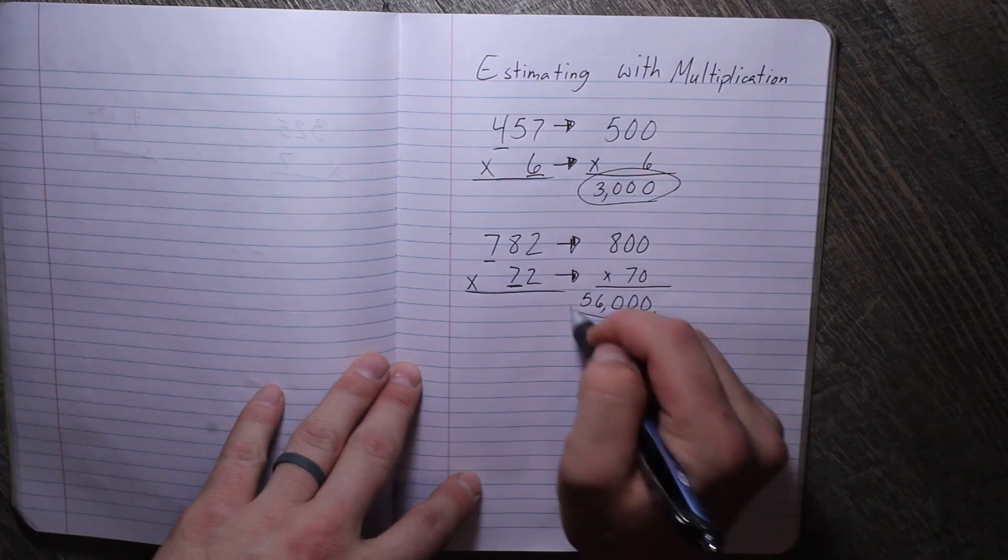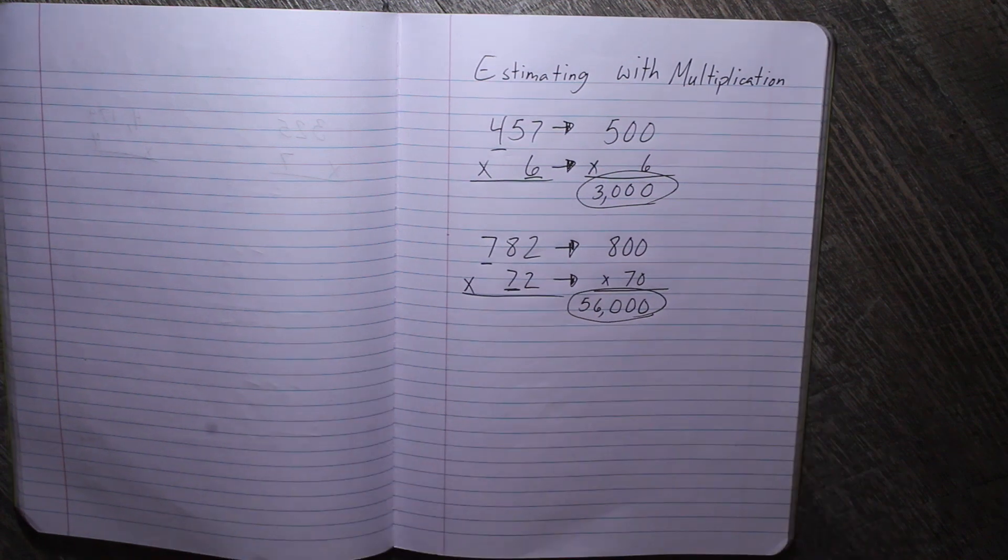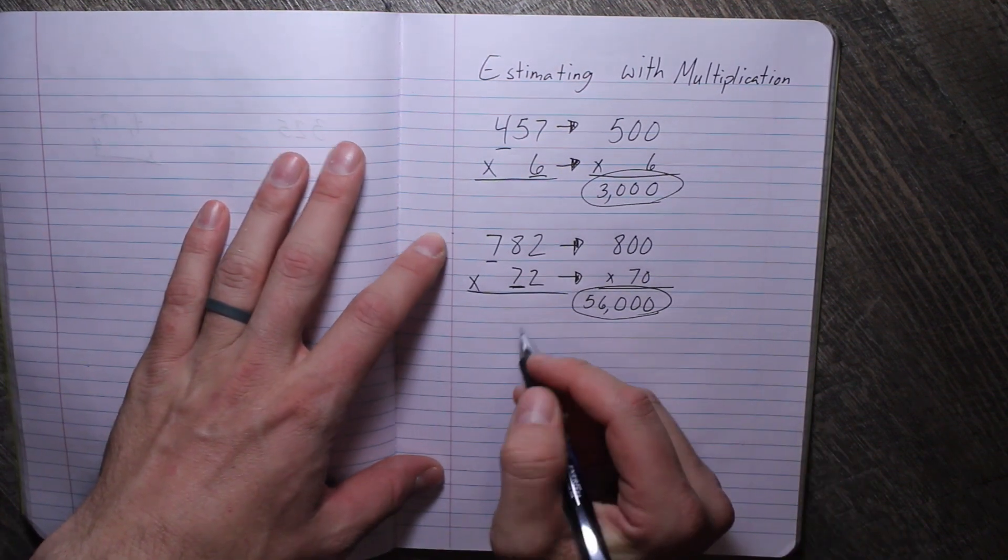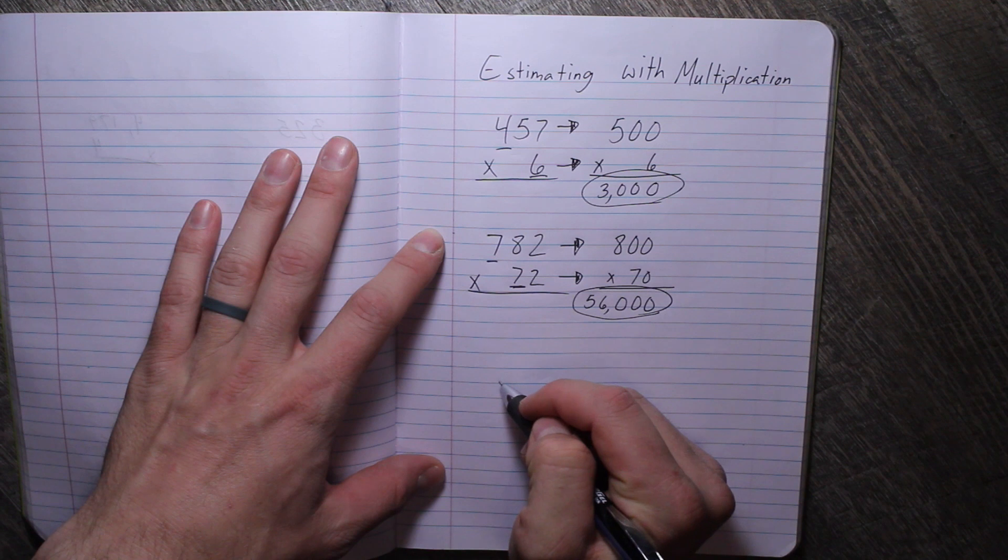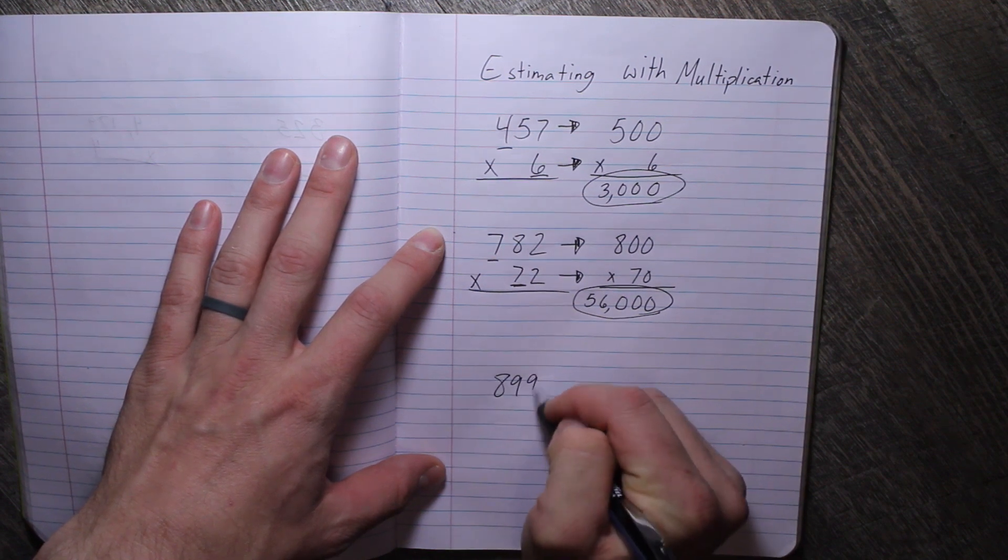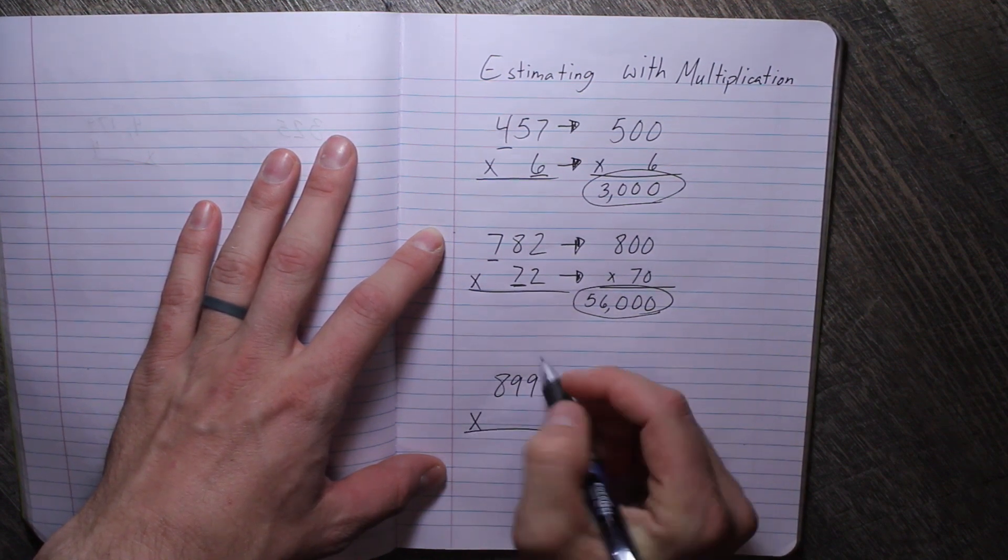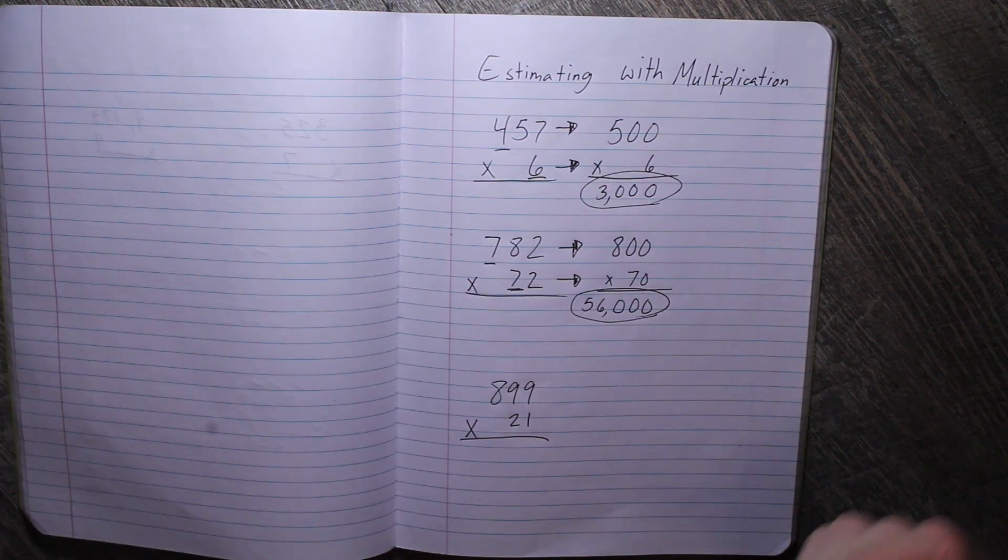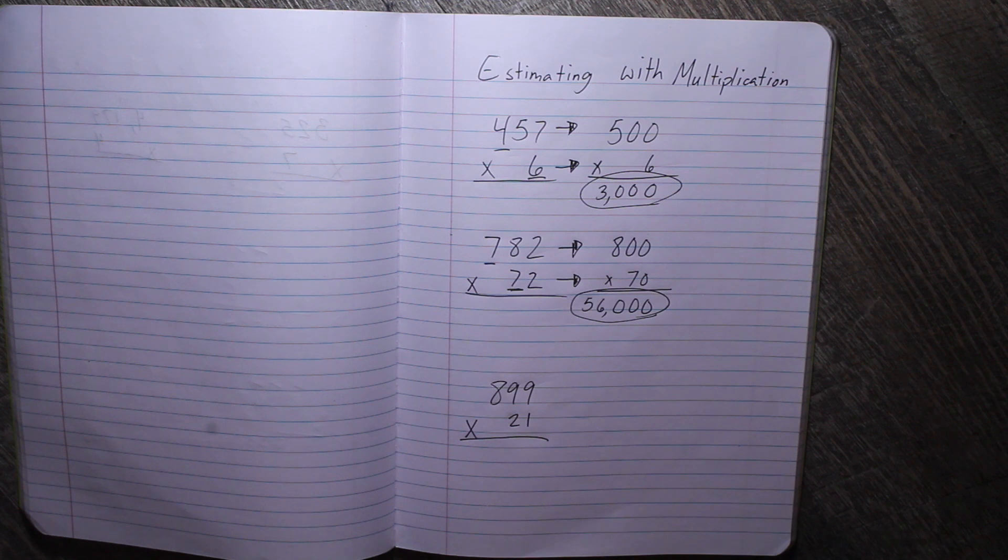So this is a good way to solve this. Now we're going to do one more, and you're going to try this on your own. So let's try. Let's have, let's say, 899 times 21. I want you to pause. I want you to round and solve this one on your own.